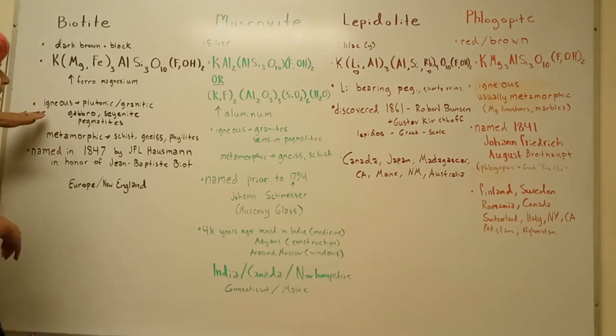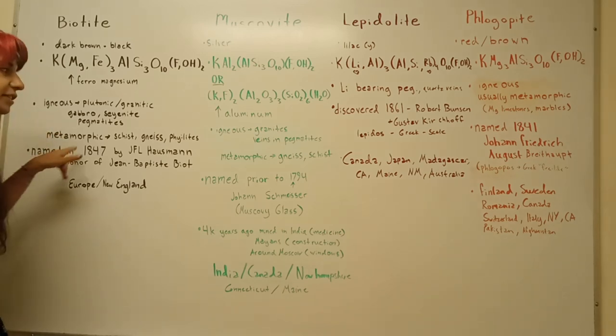You can find it in igneous rocks, so like granitic plutons, gabbros, syenites, pegmatites, and you can also find it in metamorphic schists, gneisses, and phyllites.